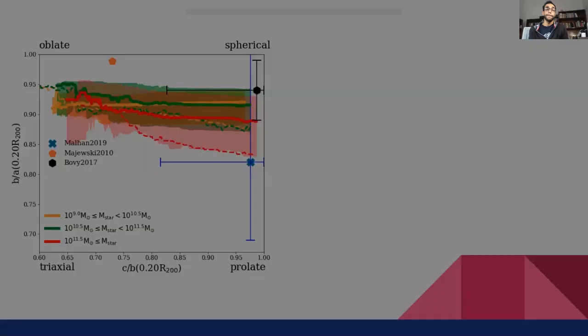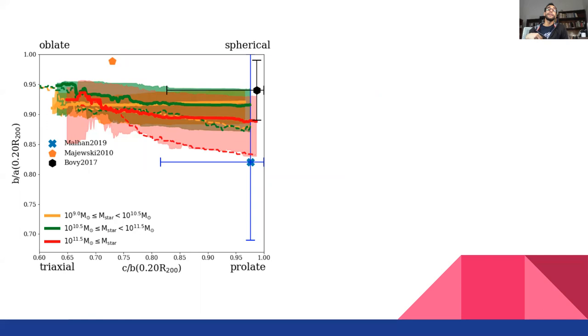To better visualize this trend, in the next figure, we show B to A versus C to B ratio of Trayford 2019, but for the dark matter halo shape. In this plane, halos close to the top right corner are more spherical.